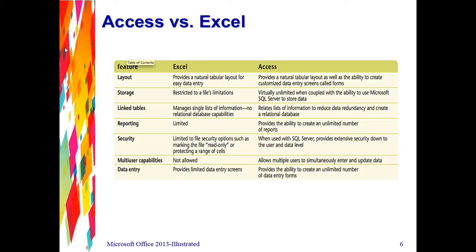With Excel, if you give somebody the rights to read it, they can read everything in the spreadsheet. With Access, you can specify exactly what each person can view. With multiple users, Excel generally opens as read-only for the second person, with only the first person able to make changes. Access allows multiple users to simultaneously enter and update data. Finally, with data entry, Excel provides limited data entry screens — basically just cells, the formula bar, or limited windows. With Access, you can create an unlimited number of data entry forms for each thing you want to use.